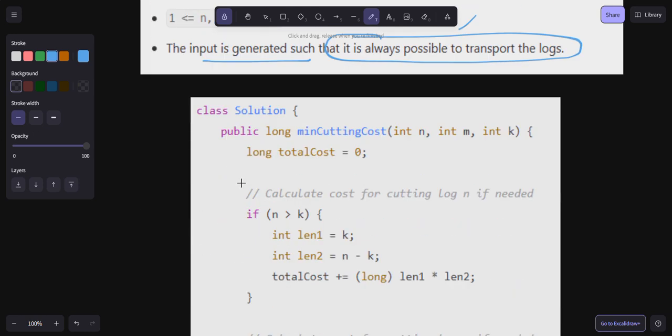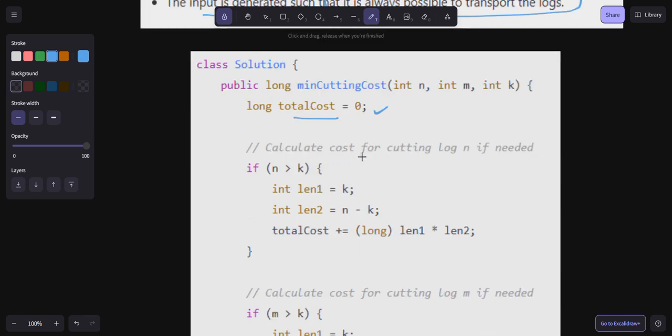It's very easy. This is the solution. Total cost we are going to keep track of. First we calculate the cost for cutting log n if needed. If n value is greater than k, then length1 is coming out like this, length2 is coming out like this, and total cost is going to be length1 into length2.